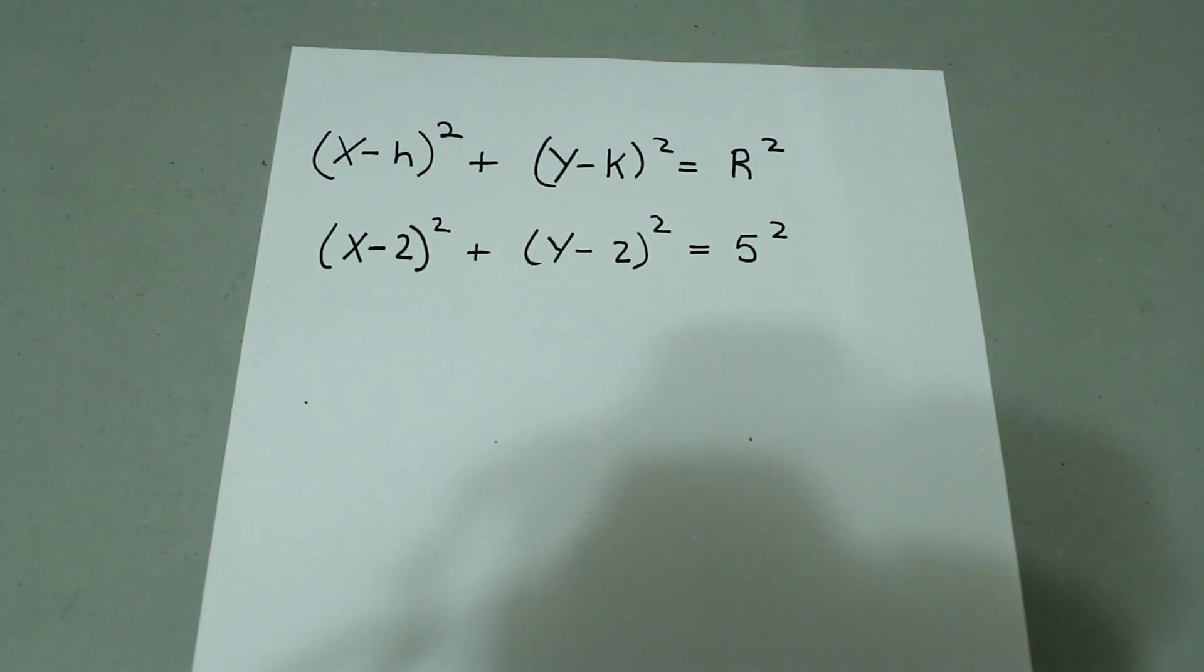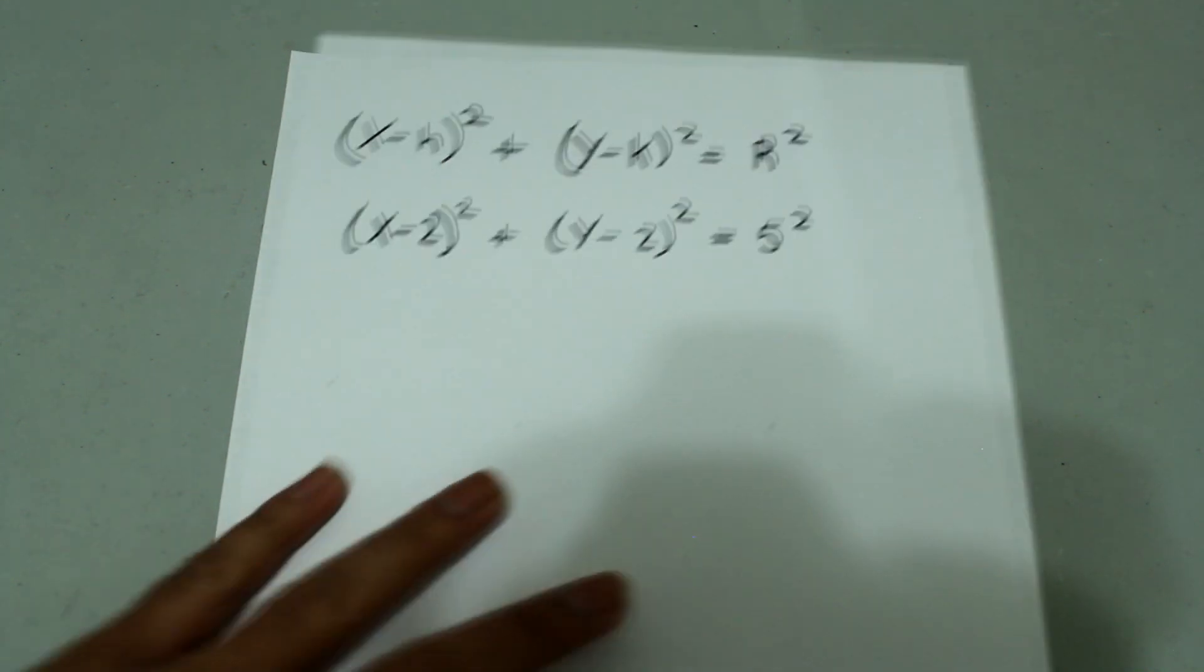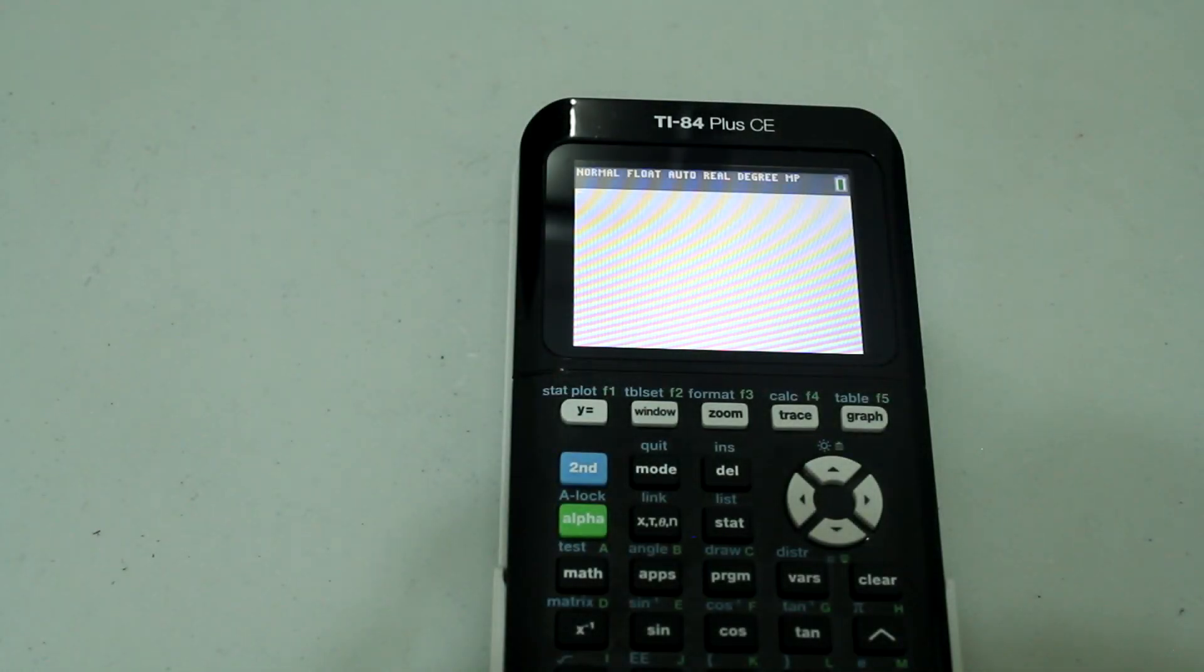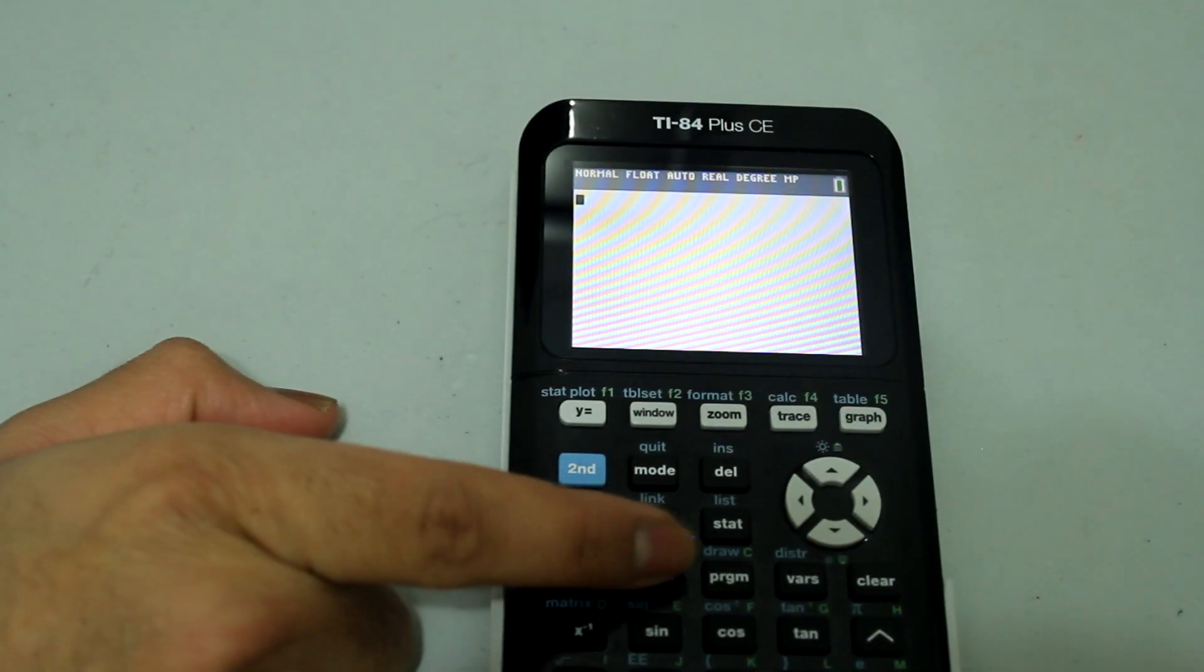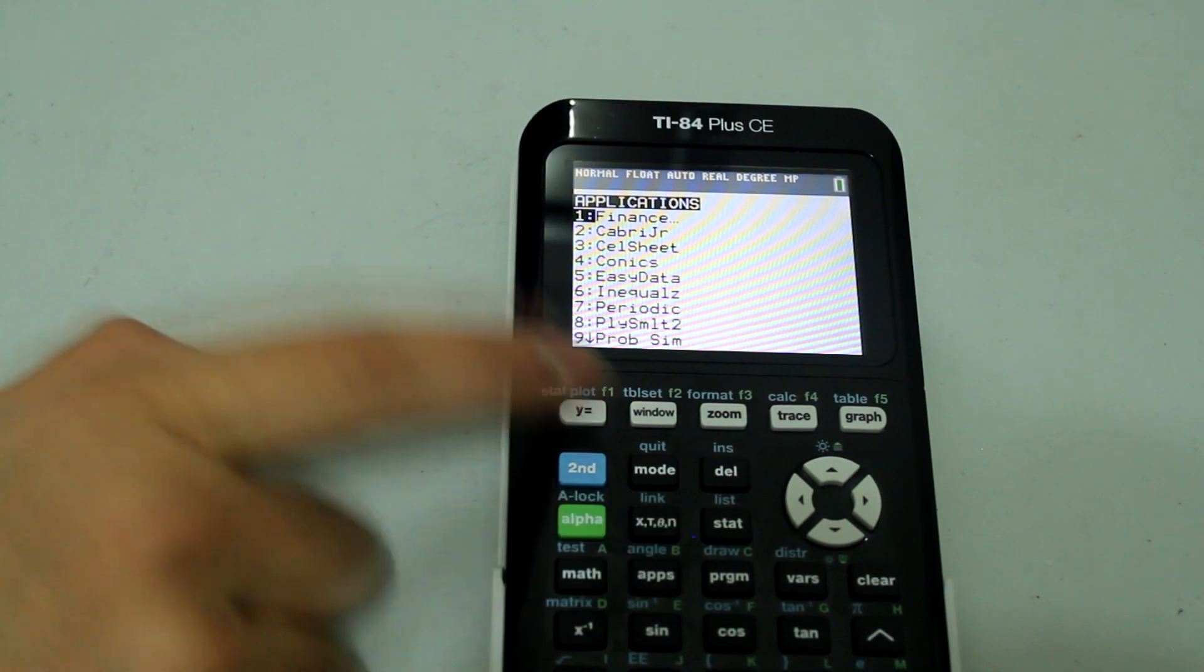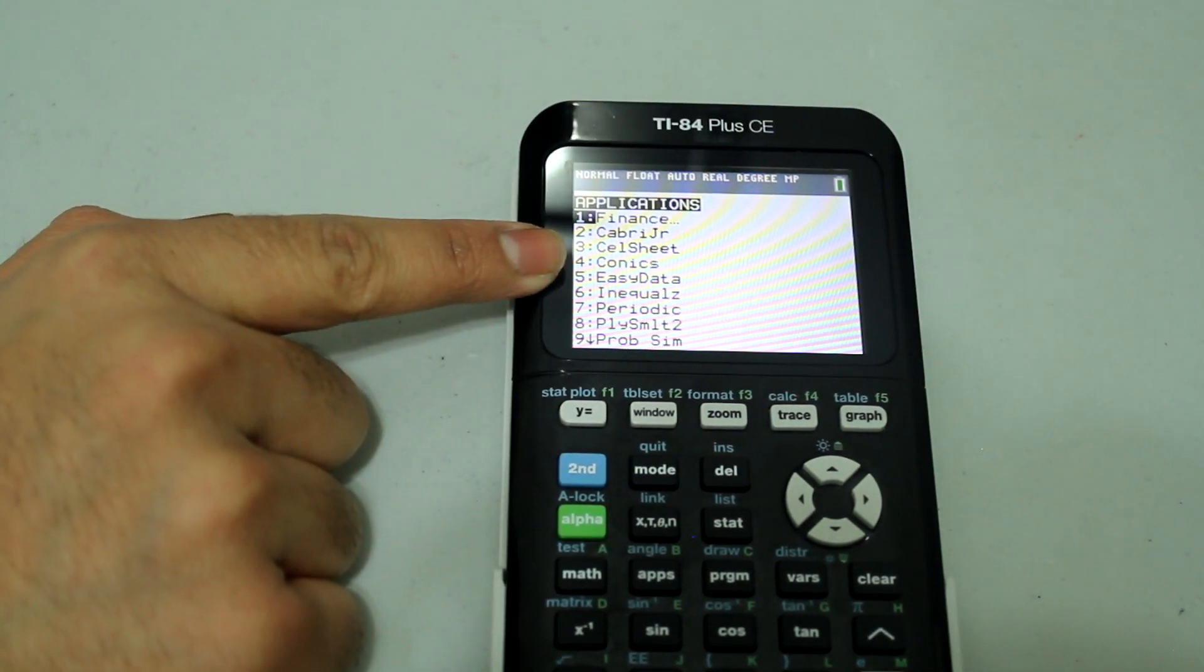So if we were to graph this on our TI-84 plus CE it would look something like this. So first press the apps button right here and then select conics.